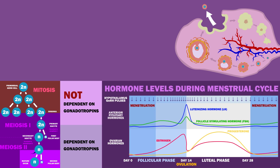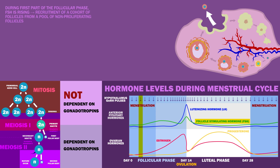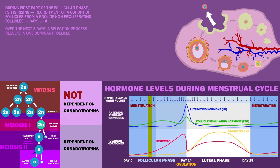During the first part of the follicular phase, FSH is rising, which leads to recruitment of a cohort of follicles from a pool of non-proliferating follicles. This happens on days 1 to 4 of the menstrual cycle, and FSH acts as an important survival factor, preventing these follicles from apoptosis. Over the next 3 days or so, a selection process occurs under the influence of several hormones, resulting in one dominant follicle surviving while the others undergo atresia.